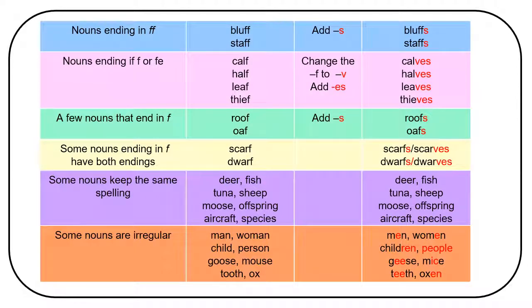They become men, women, children, people, geese, mice, teeth, oxen.